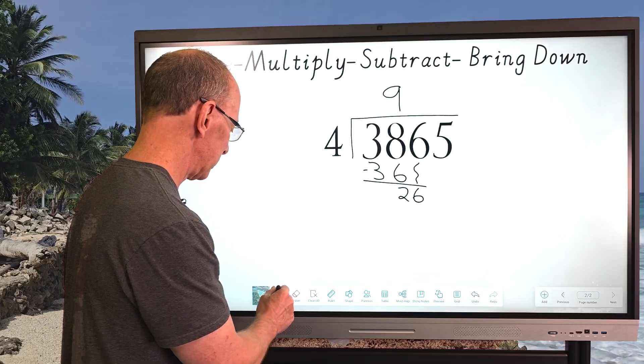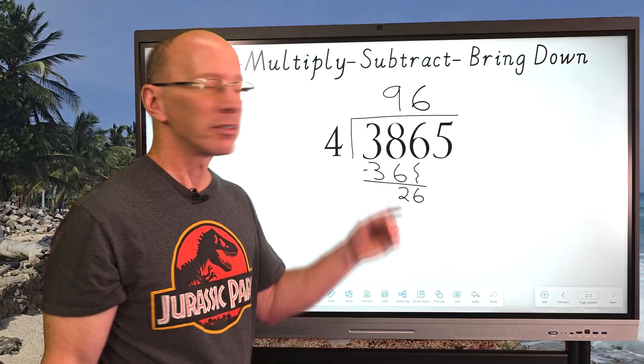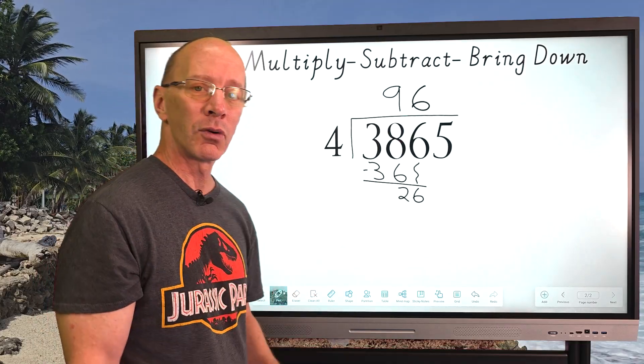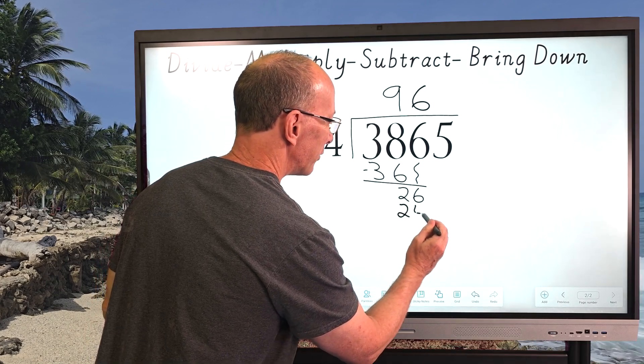All right. Now the next step is to multiply. So six times four equals 24. And so I'm going to put 24 right here.